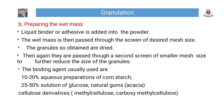Step 2 — Preparing the wet mass: A liquid binder or adhesive is added into the powder. The wet mass is then passed through a screen of the desired mesh size, and the granules so obtained are dried. Then again they are passed through a second screen of smaller mesh size to further reduce the size of the granules. Binding agents commonly used include aqueous preparations of corn starch at 10–20%, glucose solution at 25–50%, natural gums, and cellulose derivatives such as methyl cellulose or carboxymethyl cellulose.